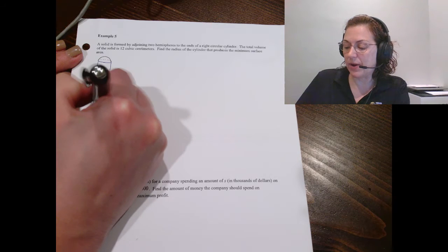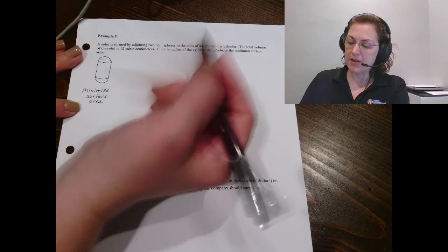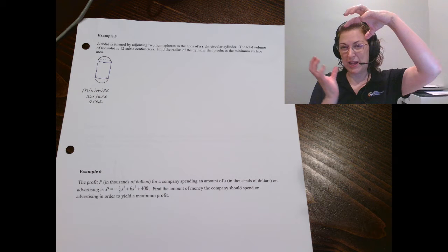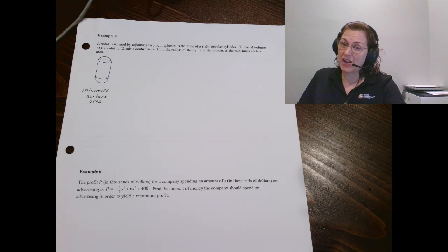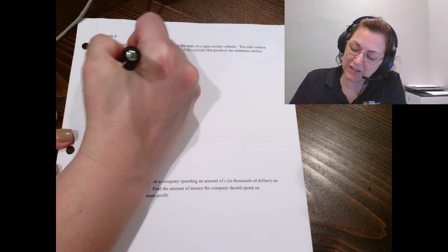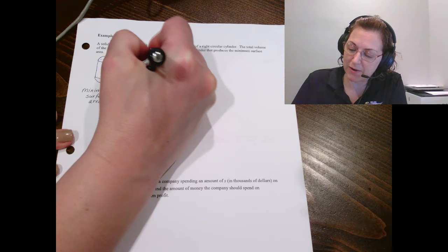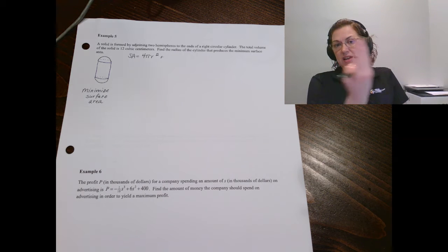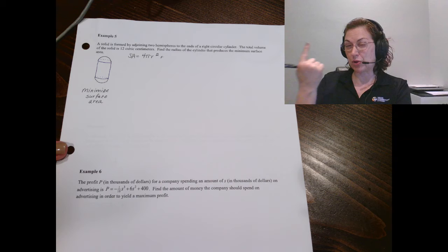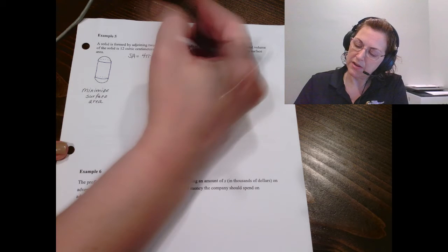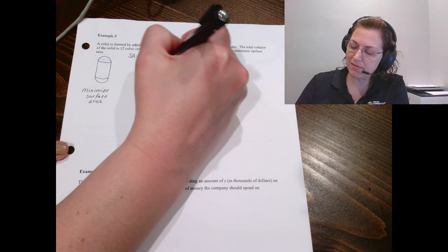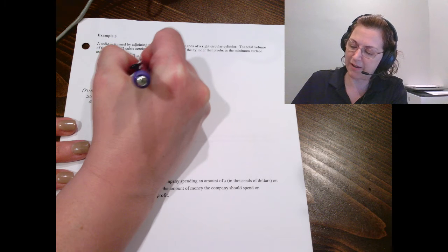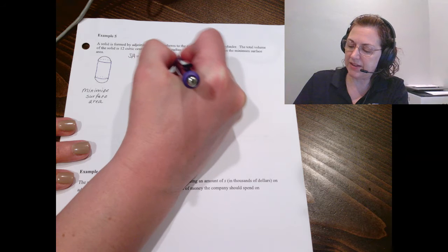So let's write an equation for the surface area. Now the surface area here, remember we've got the surface area of a sphere. So you take those two hemispheres and put them together, you've got a full sphere. So the surface area of a sphere is 4πr². Now we've got this cylinder, not the top and the bottom, but just the side around. And that's going to be the circumference of the circular top times the height. So the circumference would be 2πr times h.